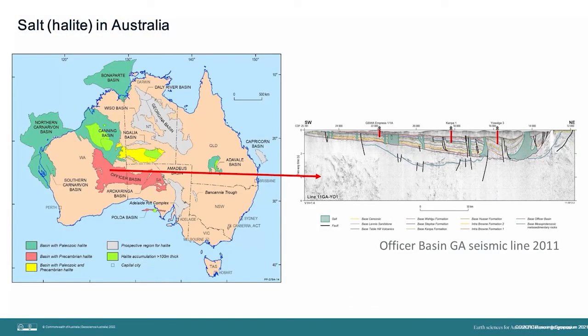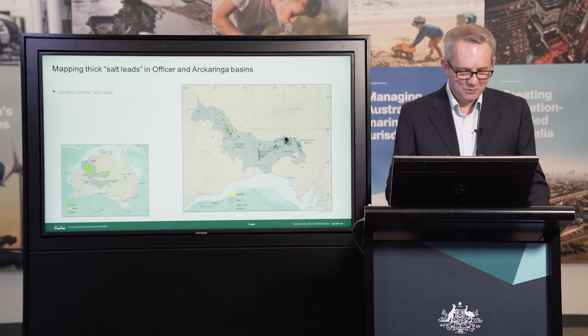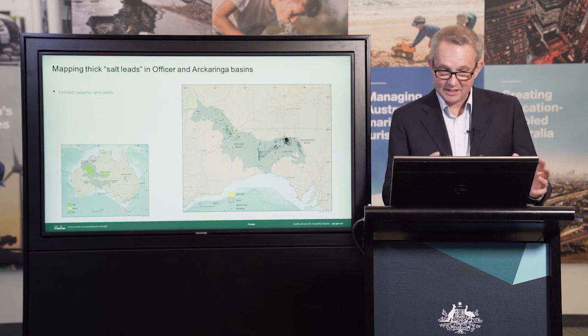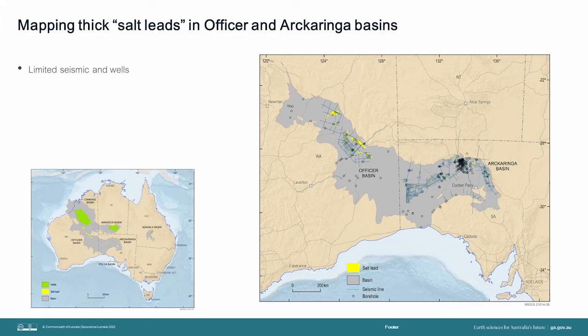The final basin we are looking at today is the Officer Basin. This large inland basin is known to contain salt, but wells to date have only intersected tens of metres of salt, not the hundreds of metres that are required. The seismic line collected by Geoscience Australia back in 2011 highlights the issue. We can see what seems to be large salt structures, highlighted in green, but all the wells to date have missed them. Salt hasn't really been considered a strategic resource in the past, and so it hasn't been a target of drilling. We have started the process of mapping salt leads in the Officer Basin and Arcaringa Basin based on the available seismic — there appear to be lots of salt structures, but they do need to be drilled to be proven up.